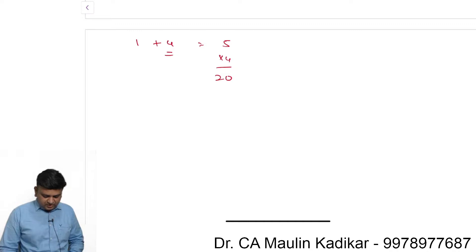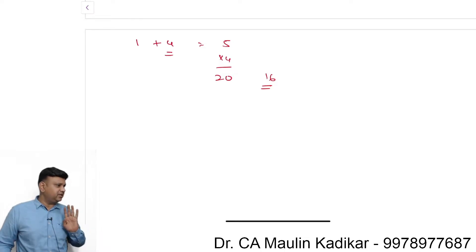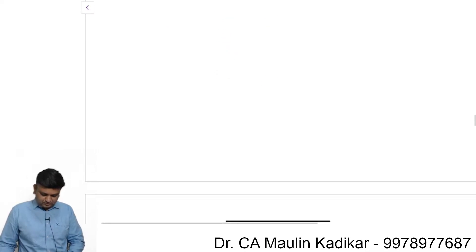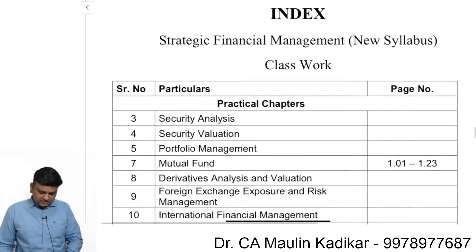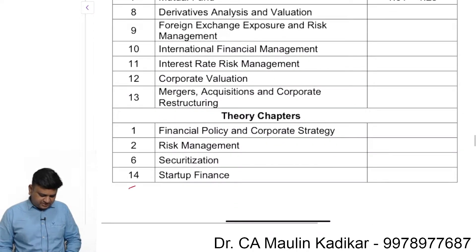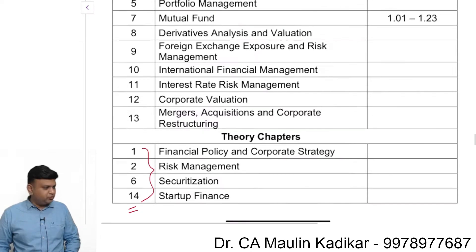In this case, compulsory theory will be 16 marks. If you have a practical question, you will have the option to attempt it. The syllabus is a total of 14 chapters, and 4 chapters have whole theory content.